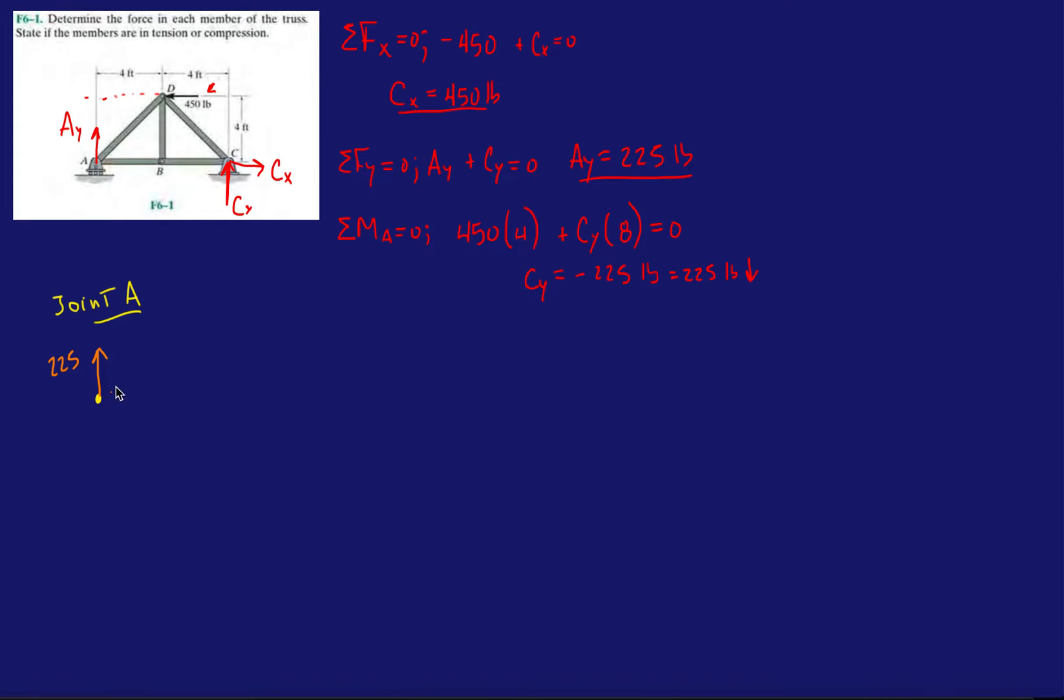And now there's two members. There's member AD connected to it and member AB connected to it. So I'm just going to draw a force along the direction of those members. So AD and AB. And notice how I drew AD and AB away from joint A, away from the yellow dot. What that means is I'm drawing those forces in tension. Anytime you draw the force away from the joint, you're drawing it in tension. So at first start off by always doing that.